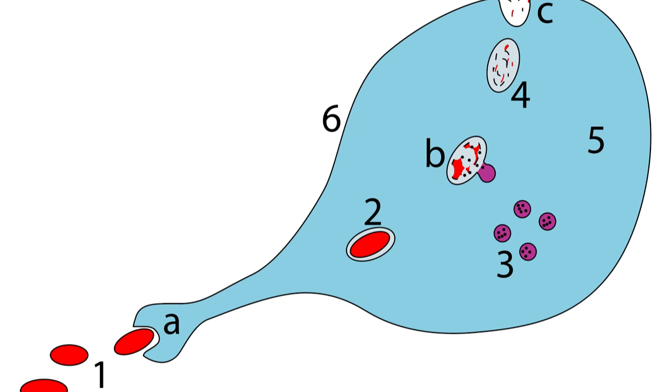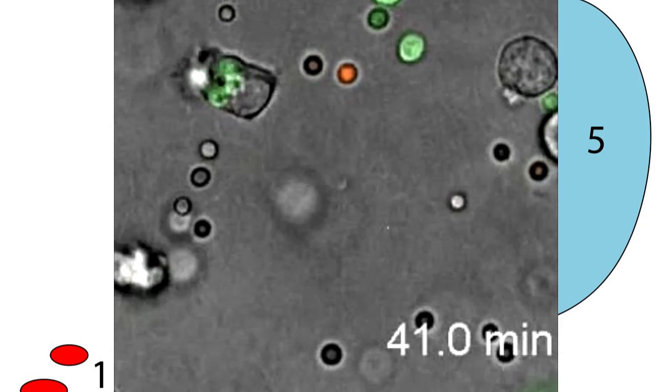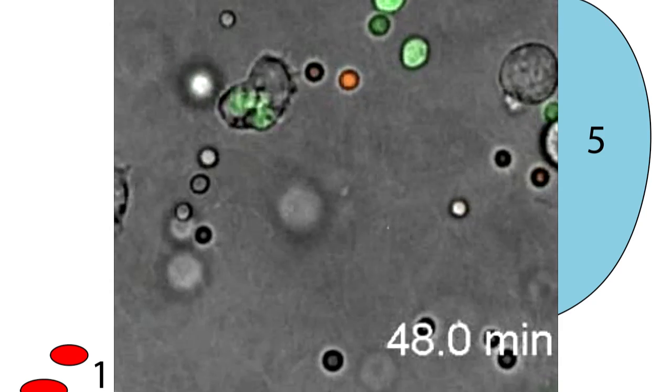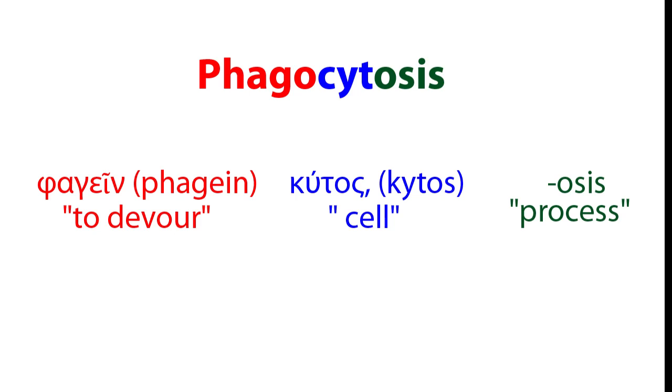As the professional APC engulfs foreign particles, they get broken down into their polypeptide chains. This process is known as phagocytosis. Greek phagein means devour, and cytosis stands for a process being carried out by a cell.